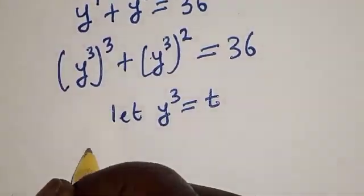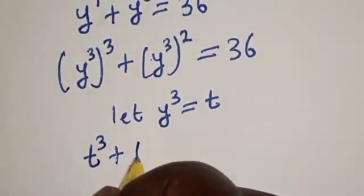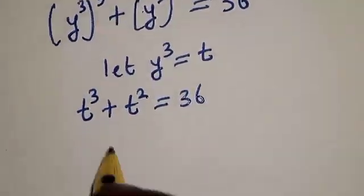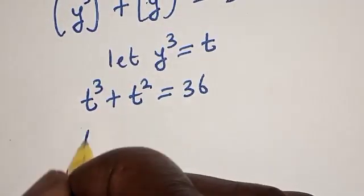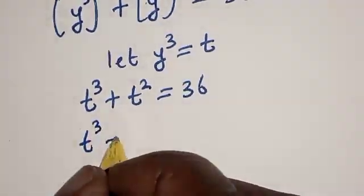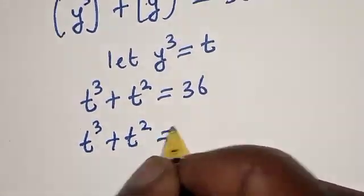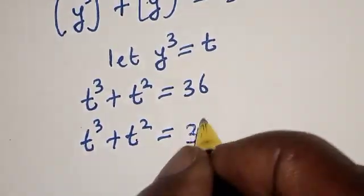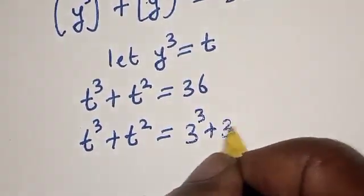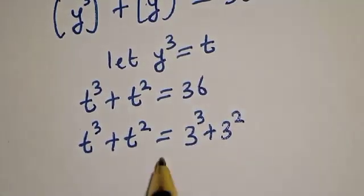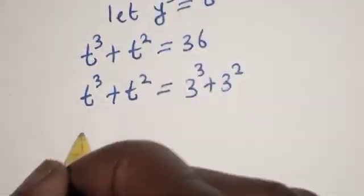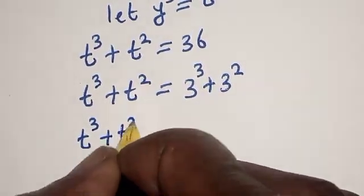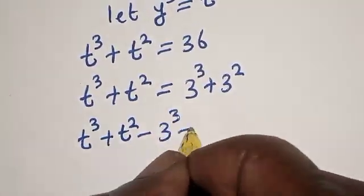We have t cubed plus t squared is equal to 36. This is the same thing as t cubed plus t squared equals 27 plus 9.